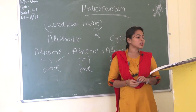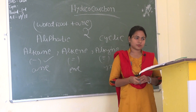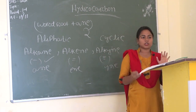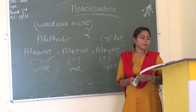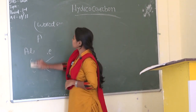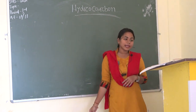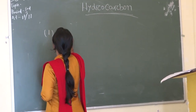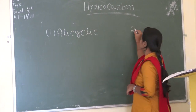Then I will discuss the cyclic compound. What is a cyclic compound? A circle-type structure is called a cyclic structure. It is classified into two categories: alicyclic and aromatic. First one is alicyclic and second is aromatic.